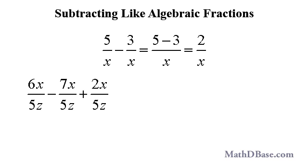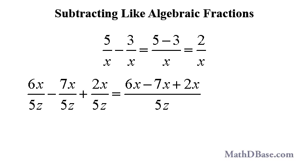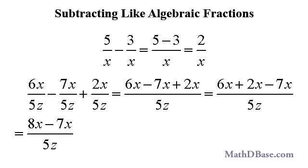6x over 5z minus 7x over 5z plus 2x over 5z is equal to 6x minus 7x plus 2x all over 5z. We can rearrange the order of the terms in the numerator as long as each term keeps the sign that it had originally, to get 6x plus 2x minus 7x all over 5z, which simplifies to 8x minus 7x over 5z, or x over 5z.